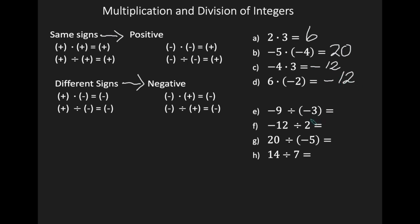Let's take a look at division. I have negative 9 divided by negative 3. My signs are the same, so when your signs are the same, your result is positive. I'm going to divide 9 by 3, which gives me 3. So your answer is simply 3 — you do not need to put the plus sign, but it's there to emphasize that the 3 is positive.